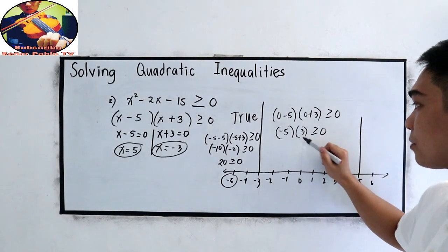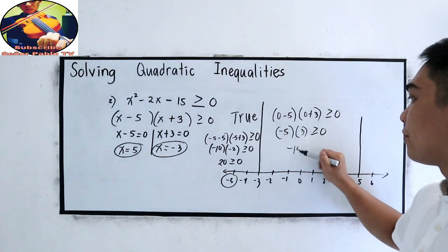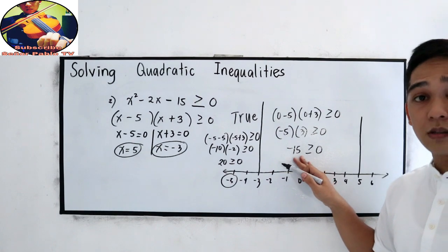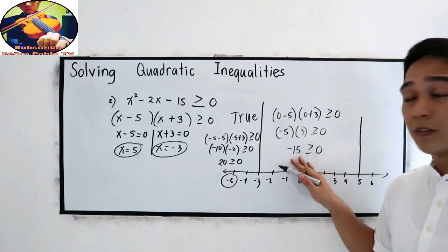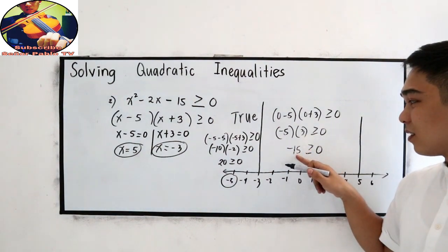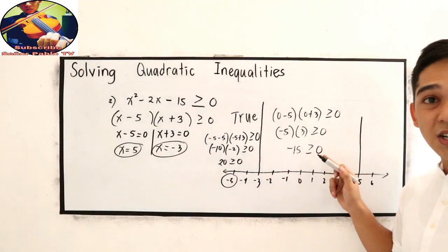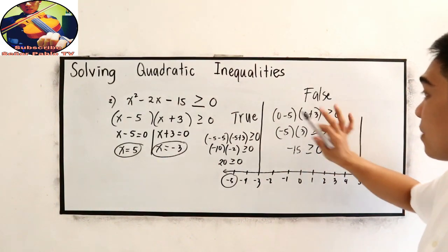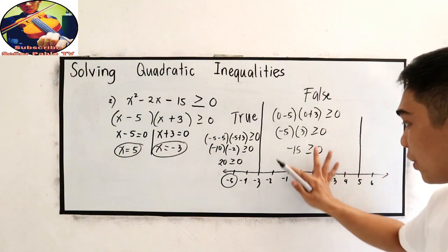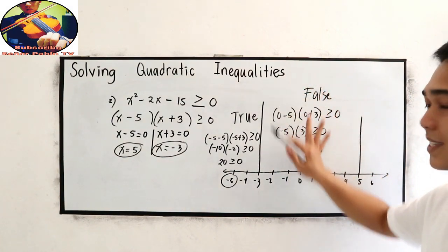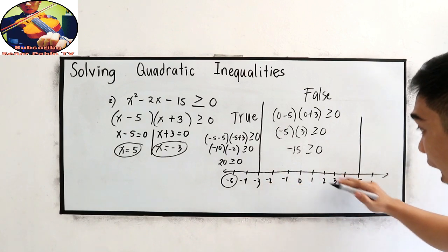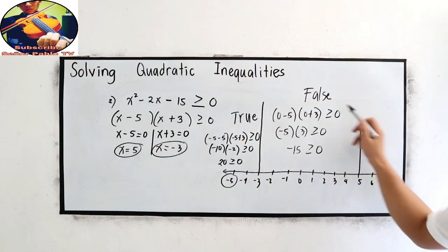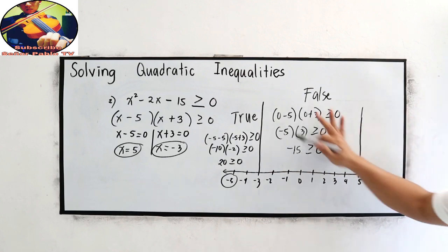Negative 5 times positive 3, negative 15, greater than or equal to 0. True or false? Negative 15 is less than 0. So this is false. That means the following numbers do not satisfy our inequality. Okay, let us neglect those numbers.